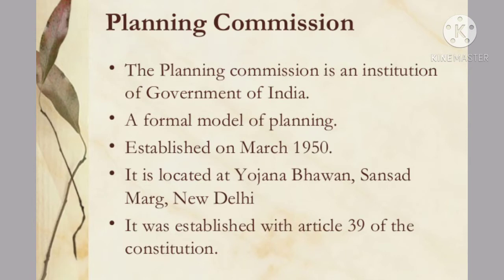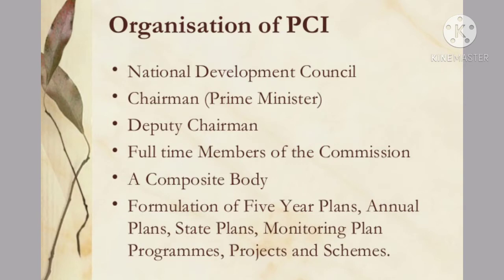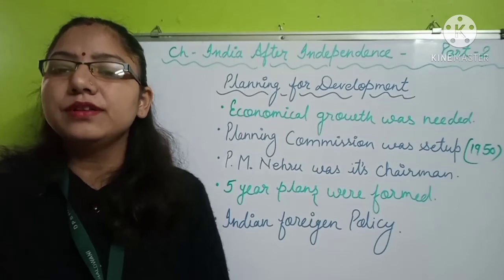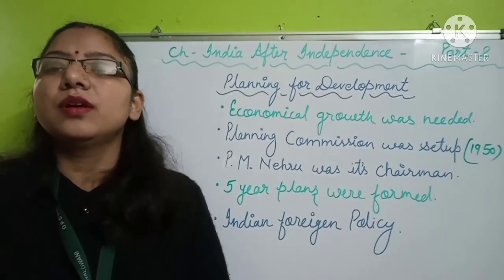The main objectives of the Planning Commission were to achieve full employment, higher levels of national and per capita income, to set up a society based on equality and justice without exploitation, and to reduce inequality of income and wealth. To develop the agricultural field, after 1965 the Indian government adopted the policy of introducing high-yielding variety seeds, increased use of fertilizers, and large-scale irrigation. This policy led to an unprecedented increase in agricultural production, making India self-sufficient in food grains — a remarkable change termed the Green Revolution.